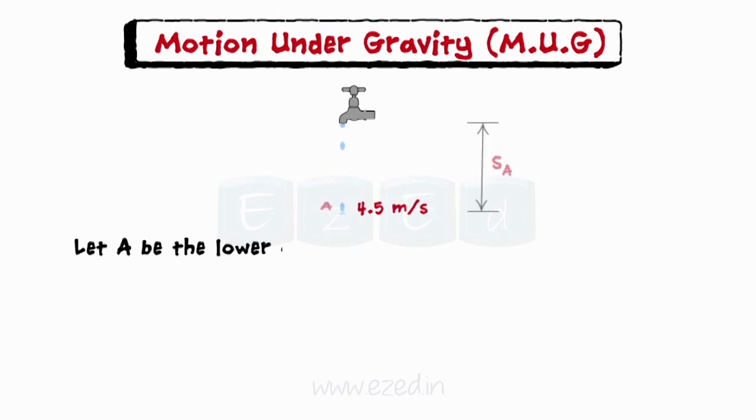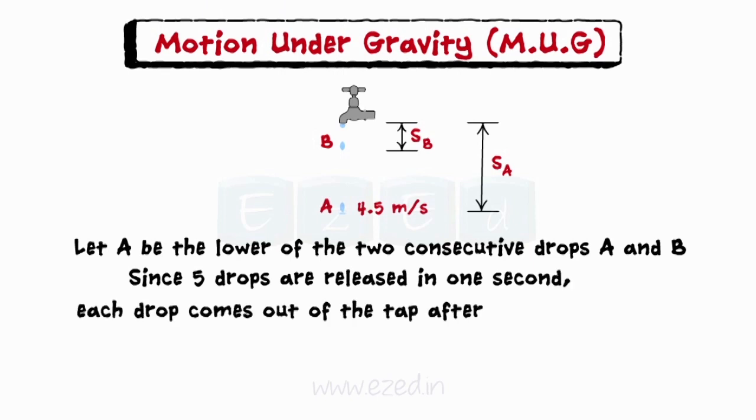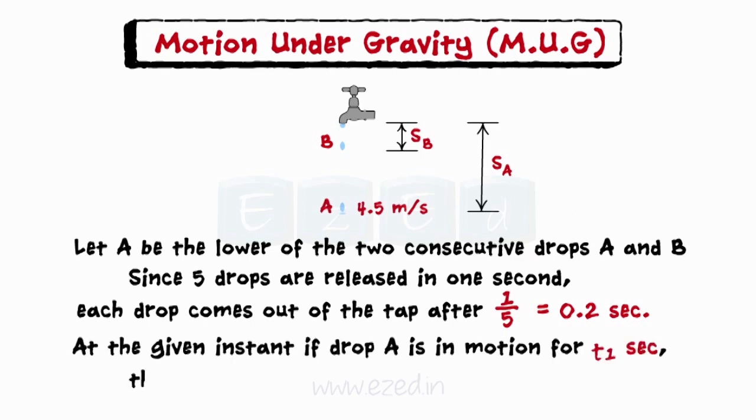At the instant shown, let the first drop be A and the second drop be B. Since 5 drops are released in 1 second, each drop comes out of the tap after every 0.2 seconds. At the given instant, if drop A is in motion for T1 seconds, drop B is in motion for T1 minus 0.2 seconds.